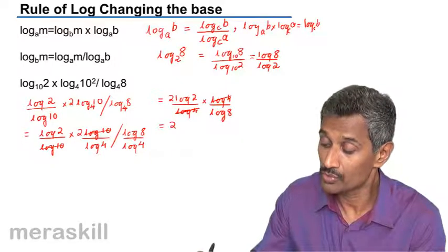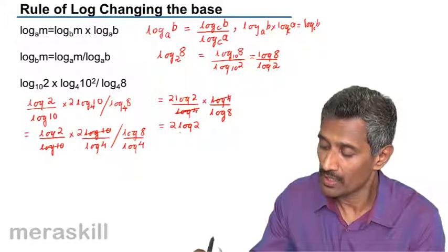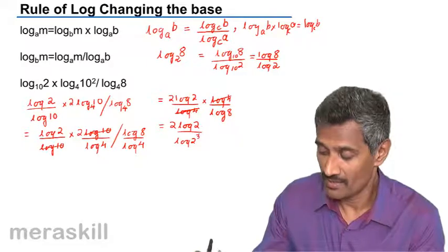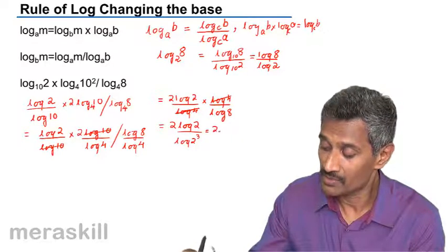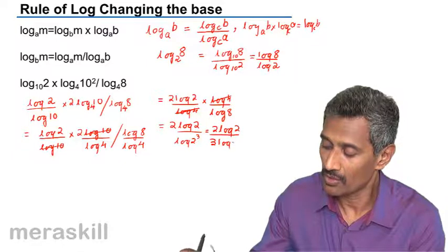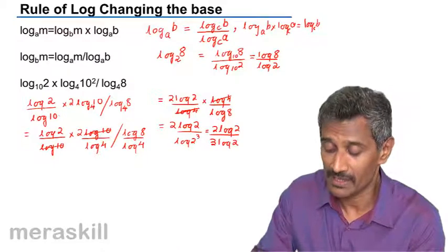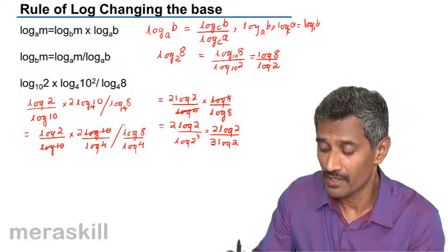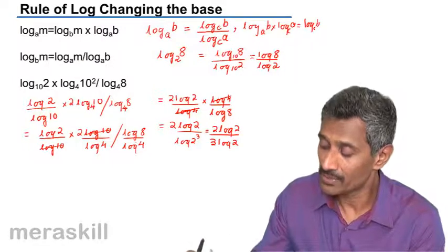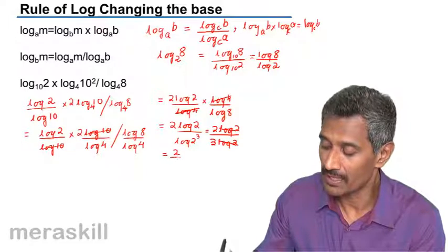We can further simplify it as 2 into log 2 upon log 4 into log 4 upon log 8. This again gets cancelled. Now to do away with the logs, we can write log 8 as log of 2 cube. So then now this becomes 2 log 2 divided by log 2 divided by 3 log 2. This gets cancelled and finally what we get is 2 by 3.